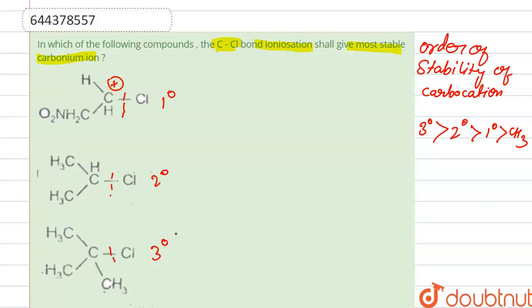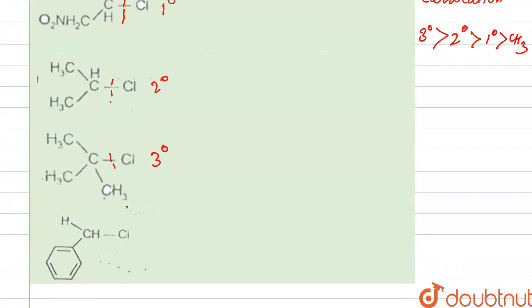Next, in option D, when C-CH bond breaks, it forms resonance. The positive charge gets delocalized and participates in resonance, right?